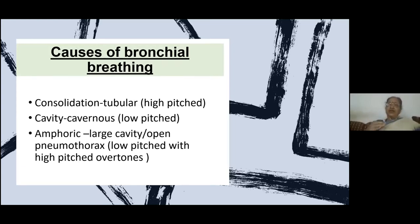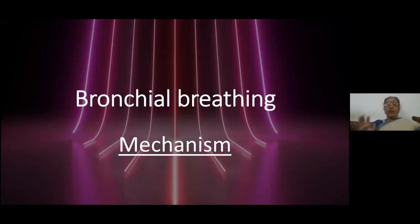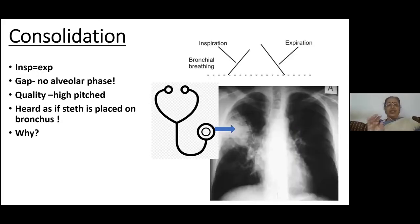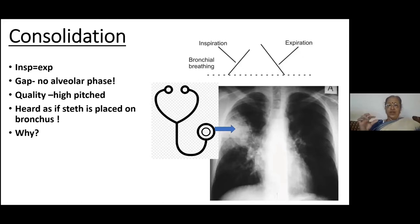Amphoric is a different kind of breathing which occurs in a large cavity. Now what is the mechanism of bronchial breathing? Let's take consolidation. Why do we get bronchial breathing in consolidation? We say that inspiration is equal to expiration — let's see what is happening. In a consolidation the lung becomes solid. The solid portion — the alveoli filled with red hepatisation, grey hepatisation, etc. — is around an open bronchus.